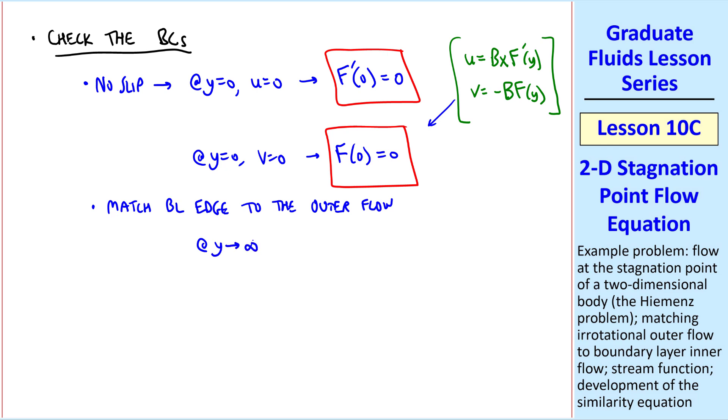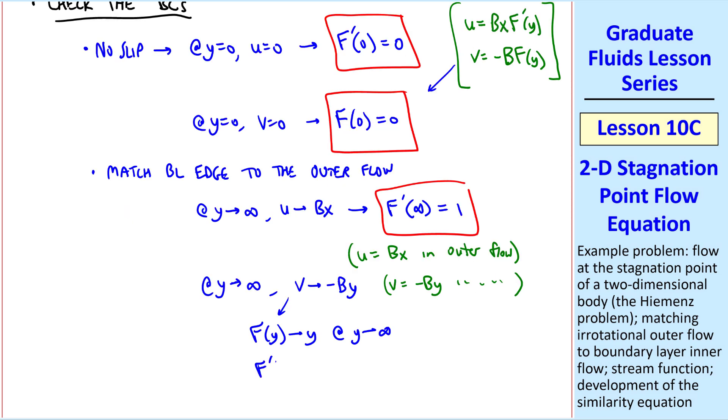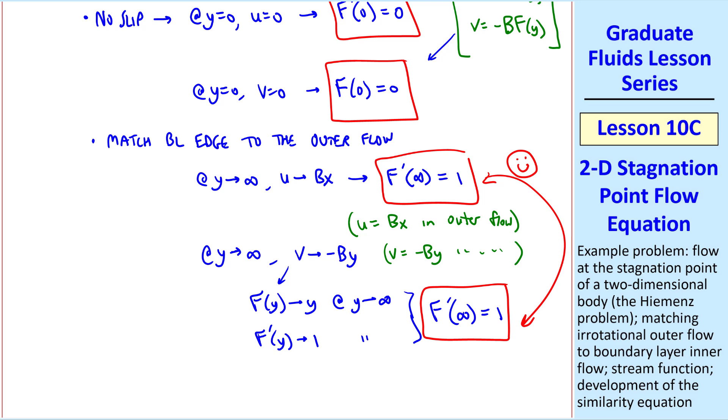Now we match the boundary layer edge to the irrotational outer flow. You may recall that as y goes to infinity, u must go to bx, which from here implies that f'(∞) must equal one. This agrees with u = bx in the potential outer flow. We also know that as y goes to infinity, v must go to -by, since v = -by in the potential outer flow. Well from here, this tells us that f(y) must approach y, as y goes to infinity, which is the same as saying f'(y) approaches one, as y goes to infinity, in other words, f'(∞) must equal one. And as we've seen several times here, we're happy when two of these boundary conditions collapse into one.